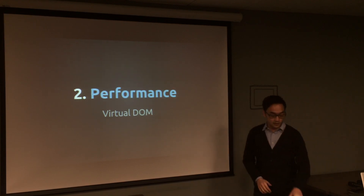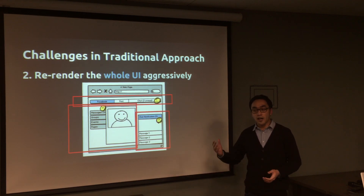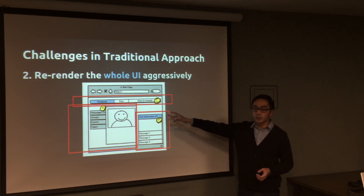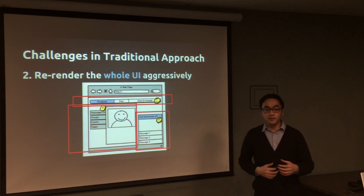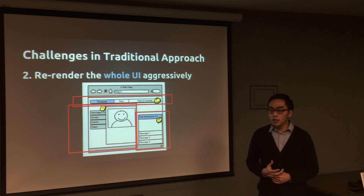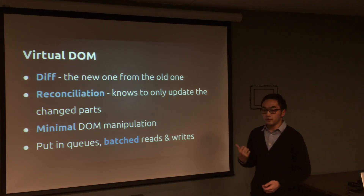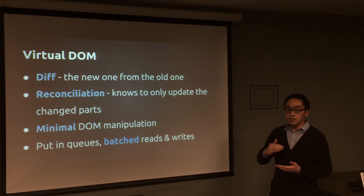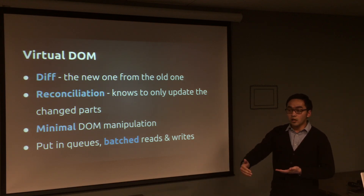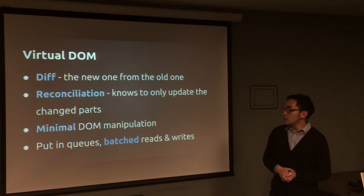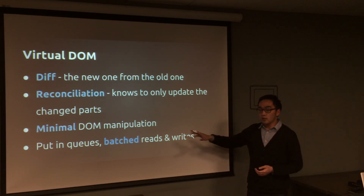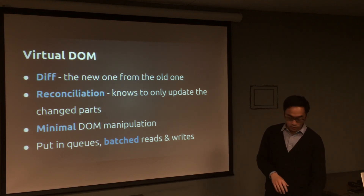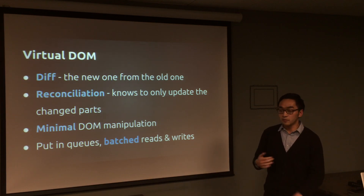Next is about performance. One of the traditional challenges is sometimes we just need to update a tiny bit — maybe just a number — but sometimes we render the whole component or even the whole page. It's very expensive to work with the DOM because the DOM is slow. So Facebook invented the virtual DOM. It uses a diff algorithm that compares the new virtual DOM with the old virtual DOM, finds the differences, and then does reconciliation with minimal DOM manipulation, updating only the differences in a batched way.